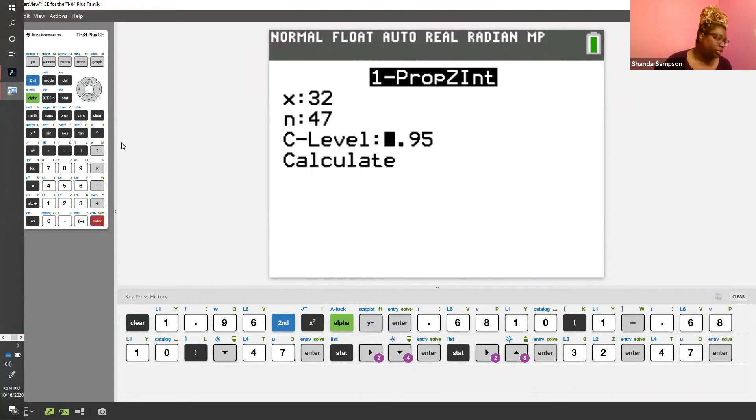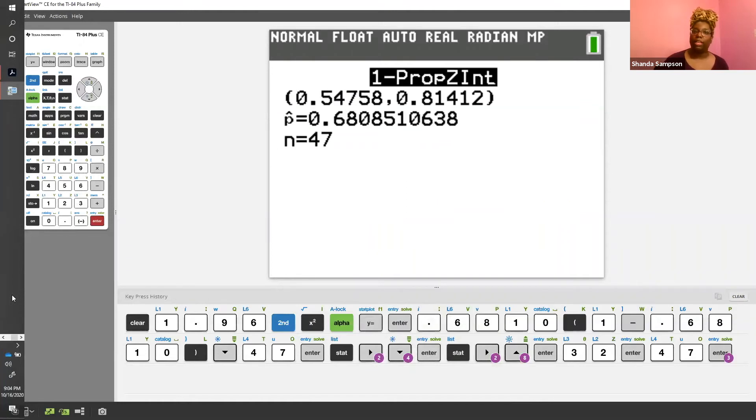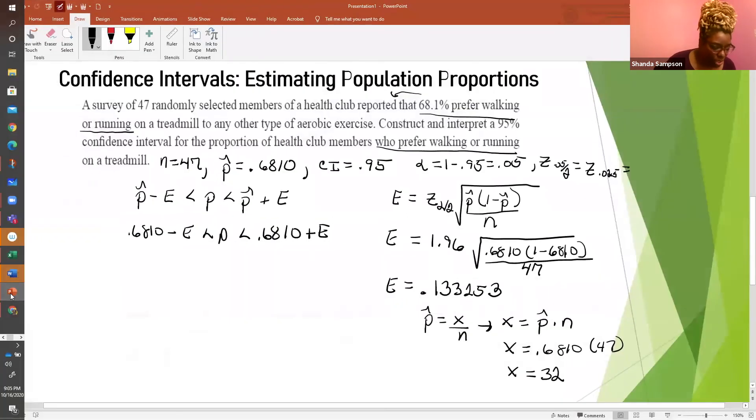And now we can put in X that we know is 32. N we said was 47. And C was equal to 0.95. Already there. So we have our interval. This is a proportion, right? And proportions need to be rounded to what? Proportions need to be rounded to four decimal places. Don't forget about that. You round based on the parameter. So your answer is going to be 0.5476 is less than P is less than 0.8141.